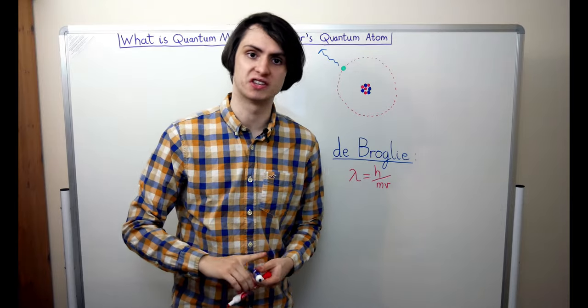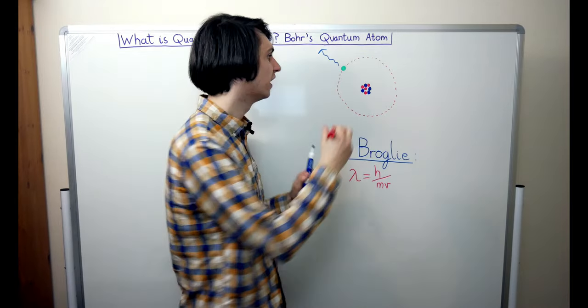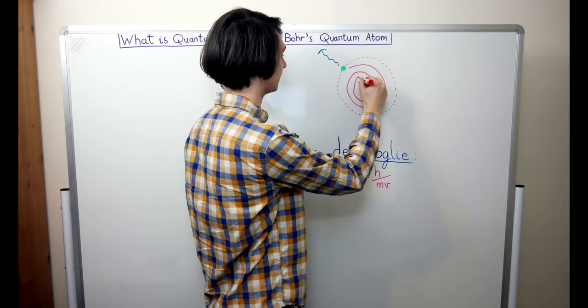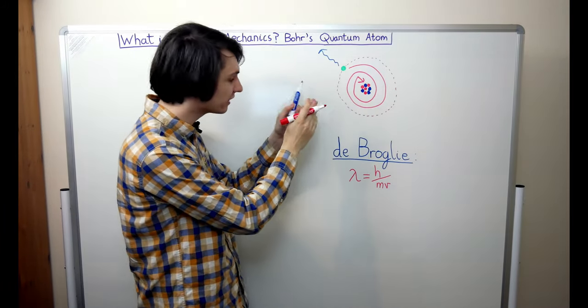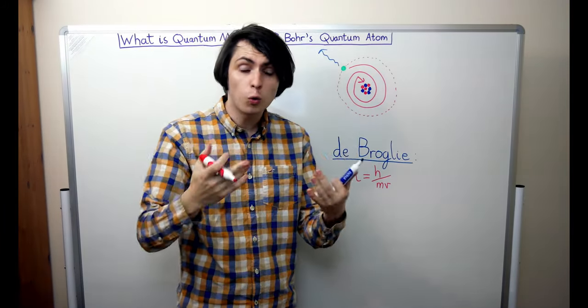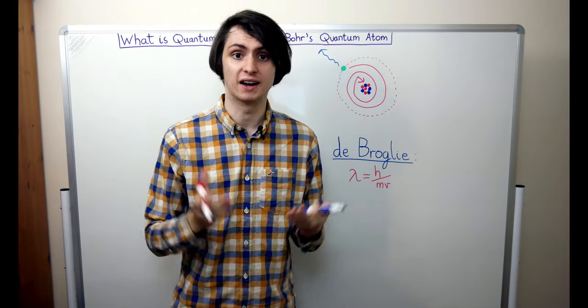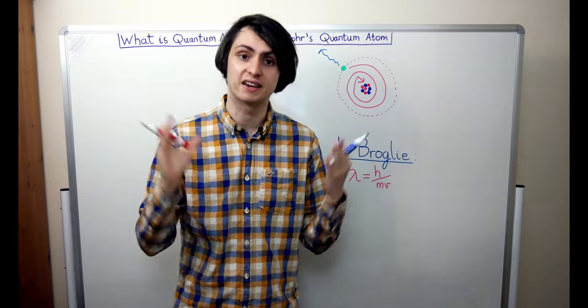As the electron loses this energy, it orbits closer and closer to the nucleus, until finally it hits it.